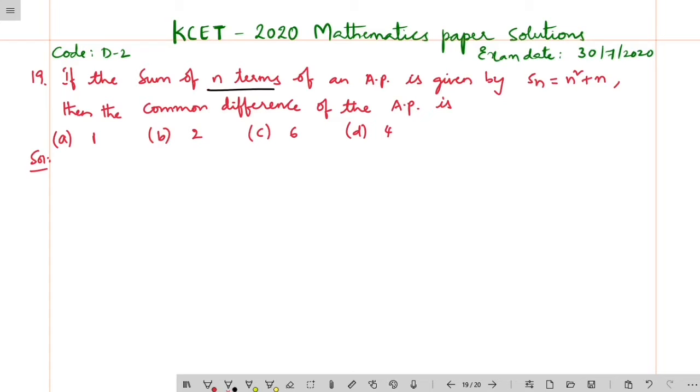If the sum of n terms of an AP is given by Sn equals n squared plus n, find the common difference of the AP.